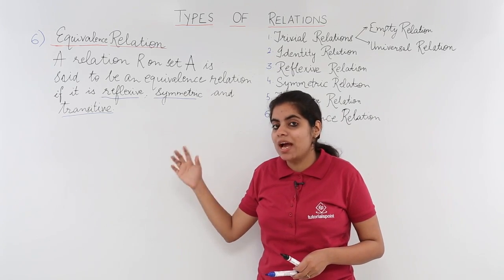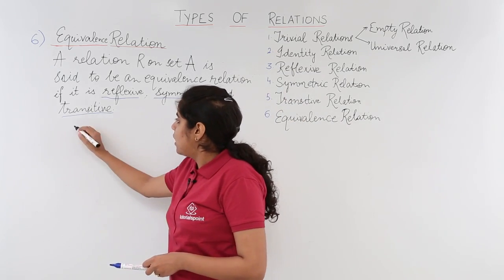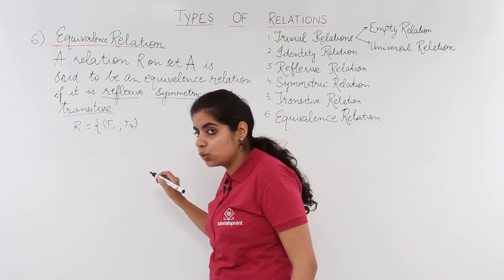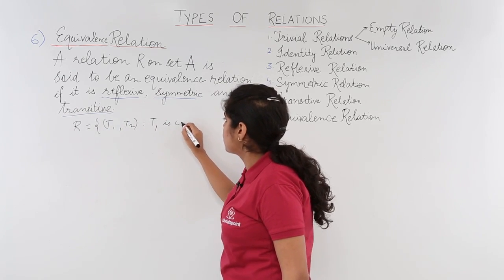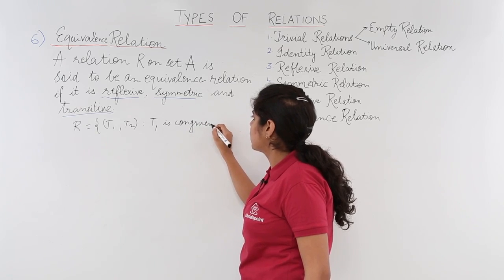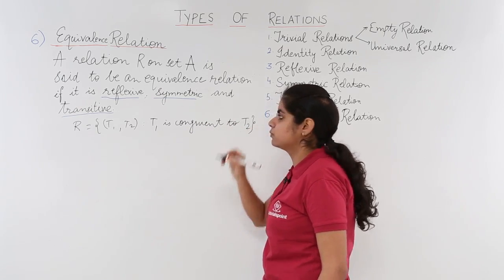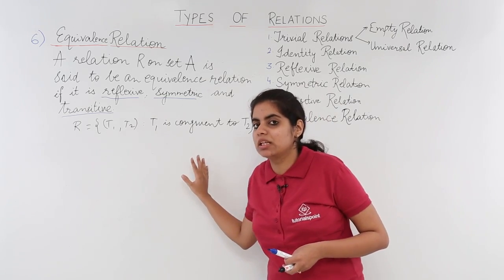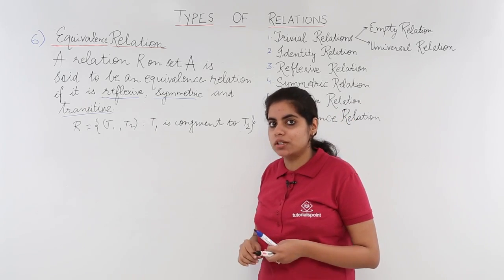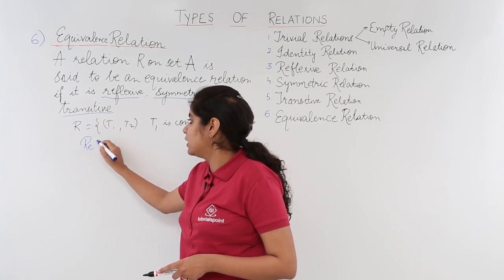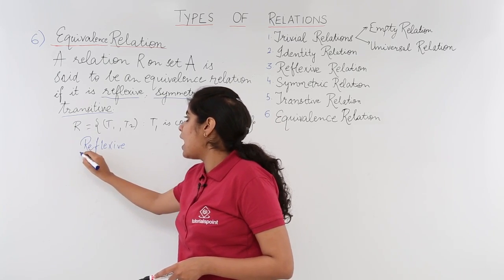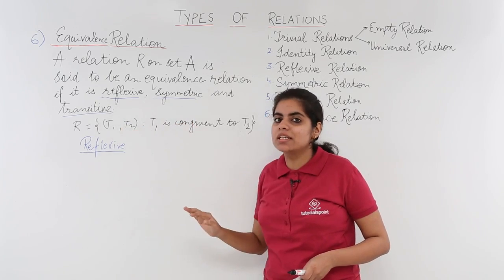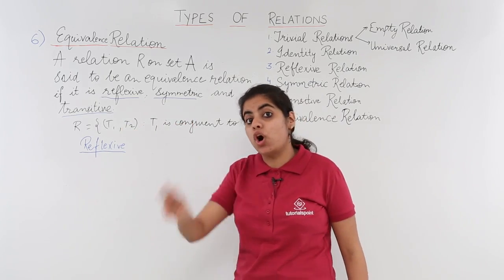Let's see with the help of an example what an equivalence relation is. A relation R defined on triangles is given as (T1, T2) such that T1 is congruent to T2. Let's see whether this relation of congruency is an equivalence relation or not. For that we need to check whether it is reflexive, symmetric, and transitive — if it is not any one of these, it is not going to be an equivalence relation. All three things are to be satisfied.